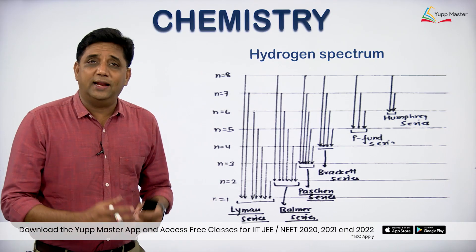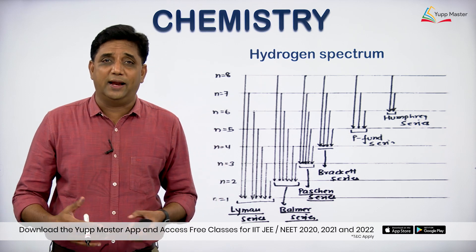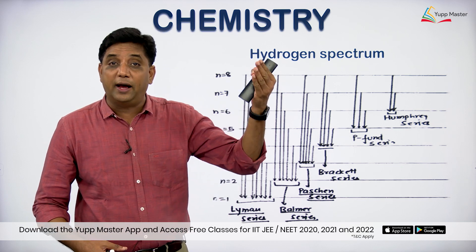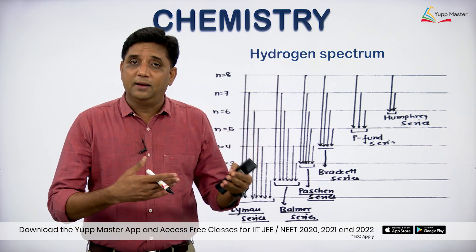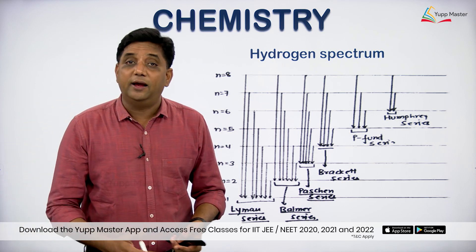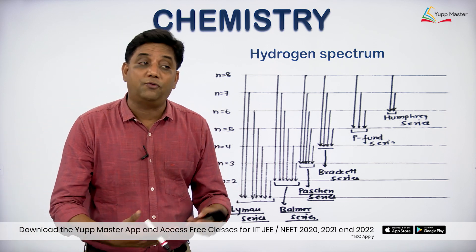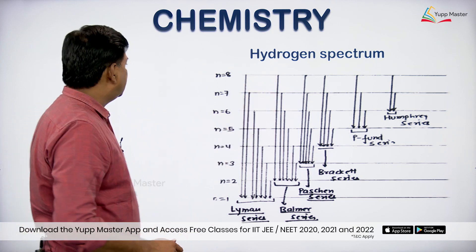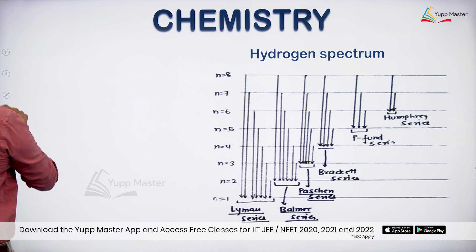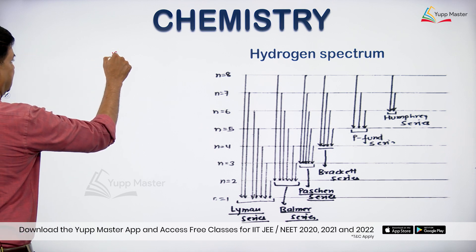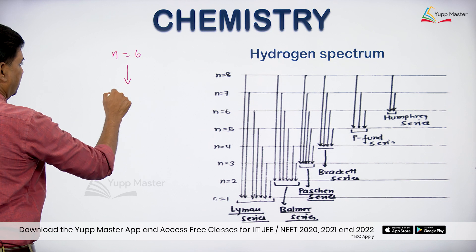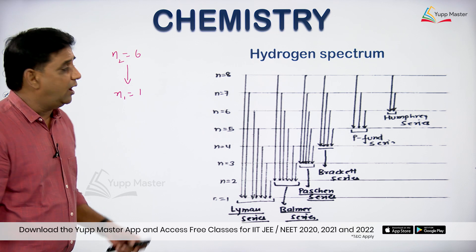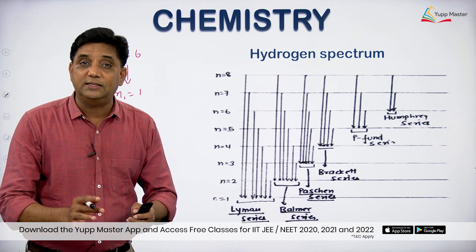Hi students, now let us see how the spectral lines — the number of spectral lines formed in each and every series when an electron jumps from a higher orbit to a lower orbit — is going to be calculated. Let us say the electron is jumping from the sixth orbit to the first orbit, so n2 is 6 and n1 is 1.